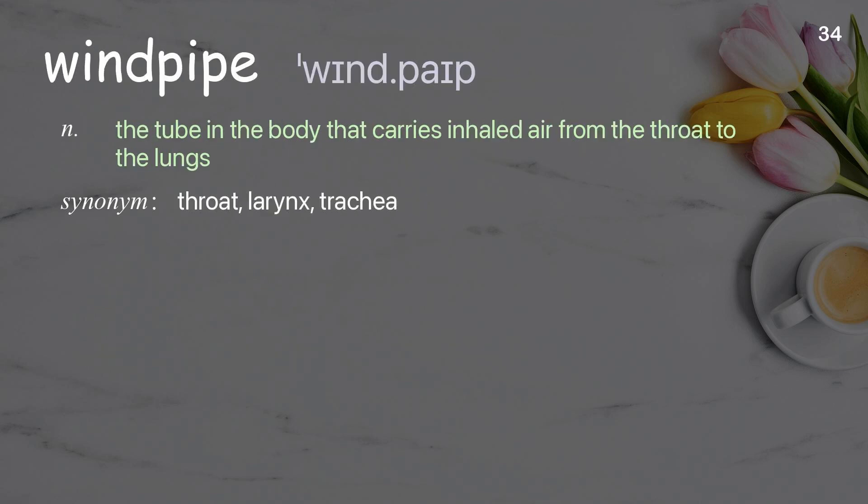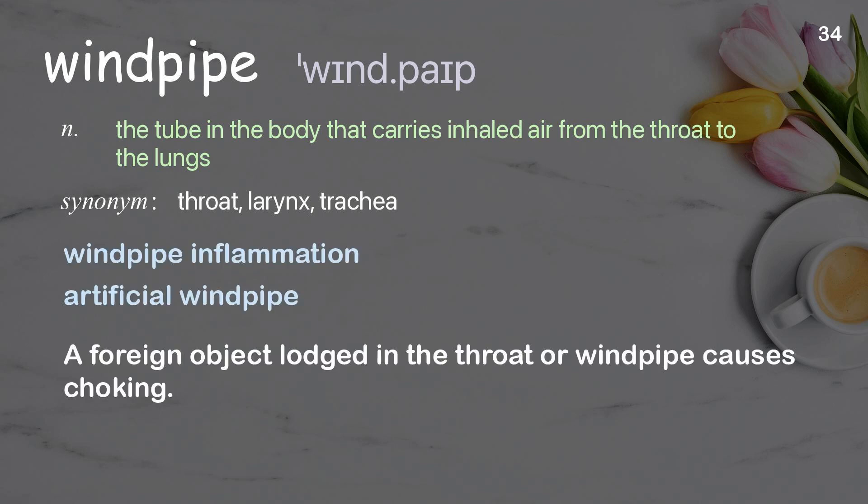Windpipe: the tube in the body that carries inhaled air from the throat to the lungs. Examples: windpipe inflammation; artificial windpipe. A foreign object lodged in the throat or windpipe causes choking.